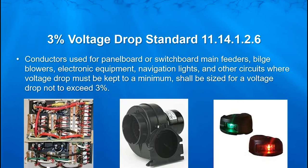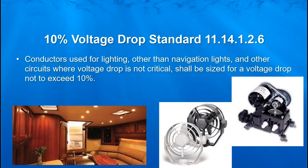Conductors used for panel board or switchboard feeders, bilge blowers, electronic equipment, navigation lights, and other circuits where voltage drop has got to be kept to a minimum — that wire shall be sized for a voltage drop not to exceed 3%. Conductors used for lighting other than nav lights and other circuits where voltage drop is not critical shall be sized for a voltage drop not to exceed 10%. Even for non-critical items, we don't want it to go over 10%, as 10% voltage drop for most electrical items is going to be an issue — it's just not going to work right.